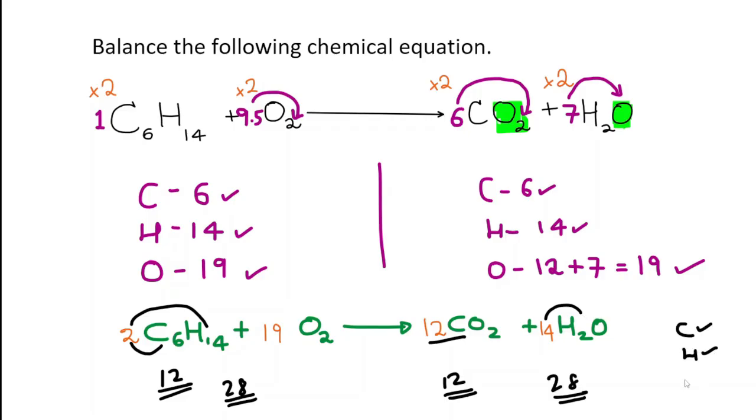Let's check the oxygens now. 19 times two is 38 oxygens. 12 times two is 24. 24 plus 14 times one is 14. 24 add 14 is also 38 and you can now clearly see you have the correct number of oxygens as well. It's all balanced.